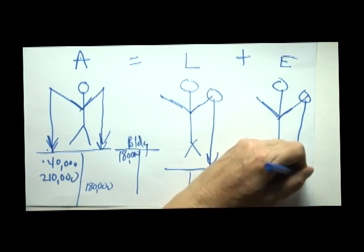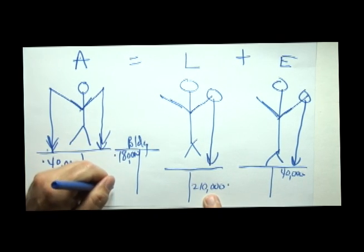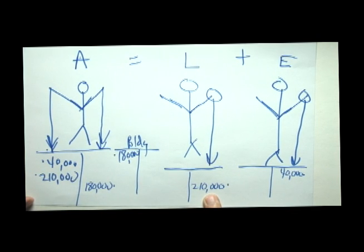And we put the increase in the asset building on the left hand side. So, here, right equal left. On here, left equal right, left equal right, left equal right. We balance.